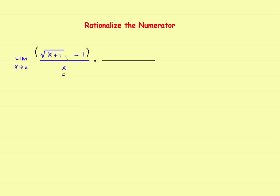Since the numerator is the square root of x plus 1 minus 1, we'll multiply it by the square root of x plus 1 plus 1 — changing the minus to a plus to form the conjugate. And whatever you do to the top, you've got to do the same thing to the bottom. So the denominator also gets multiplied by the square root of x plus 1 plus 1.